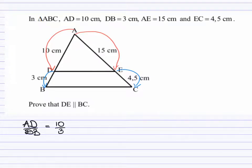We need to now compare this ratio to the other side, which is AE divided by EC, to see what that would be equal to. So 15 divided by 4.5 cm. This simplifies to 10 over 3 as well.